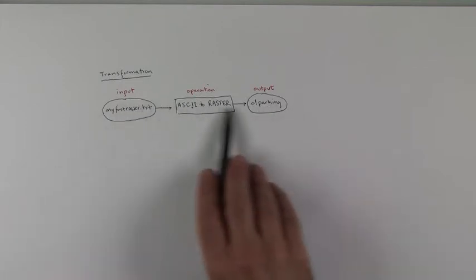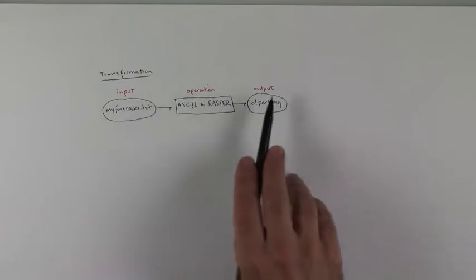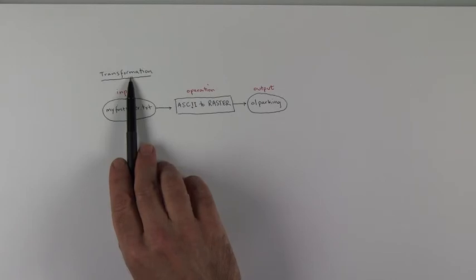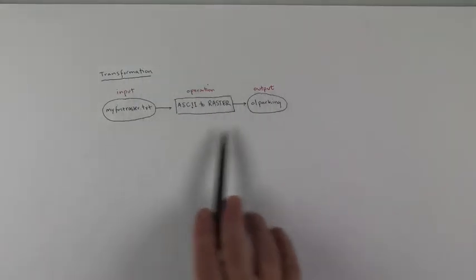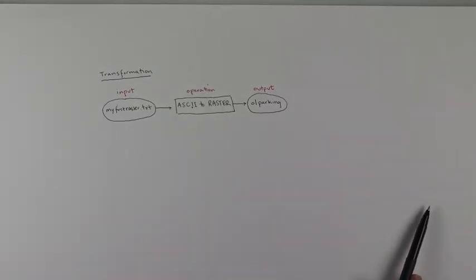And this basic kind of phrase of like noun verb noun, input operation output, is a transformation. And it's really like kind of the preliminary or like basic phrasing that we use in spatial analysis. Is that fair enough?